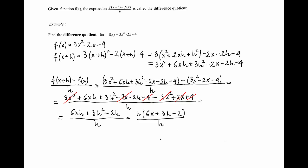All of this is divided by h. Now I have h in the numerator and the denominator, I can cancel them. And the answer would be 6x plus 3h minus 2.